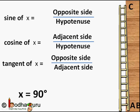Now let's say the ladder is resting next to the wall — there is no gap between the base of the ladder and the wall. So now the angle x has become 90 degrees and adjacent side AB has become 0; points A and B are next to each other. So now what will be the values? Sin of 90 degrees will be equal to opposite side BC by hypotenuse, and both are equal to the ladder size, so sin of 90 degrees will be 1.